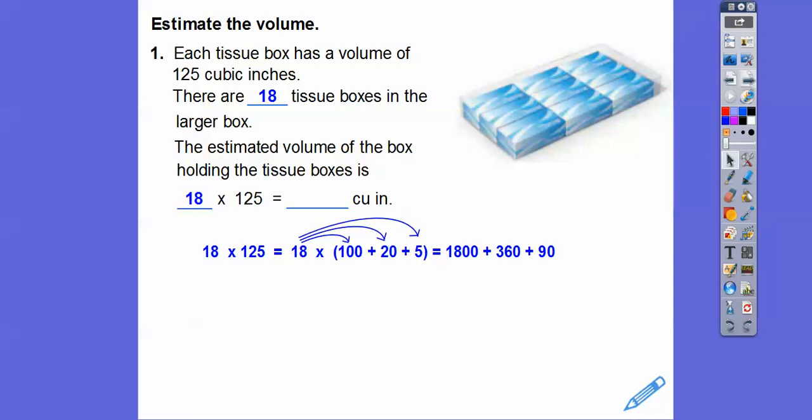So there's 1800, 360, 90. If I add all those up, I get zero right there. Then 6 plus 9 is 15, so I put a 5 down there and carry the 1. Then 1 plus 8 is 9, 9 plus 3 is 12, so I put a 2 right there, carry another 1. Then 1 plus 1 is 2. So the volume is 2,250 cubic inches. If it was only 9 boxes, just cut that in half.